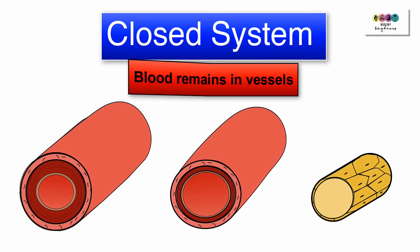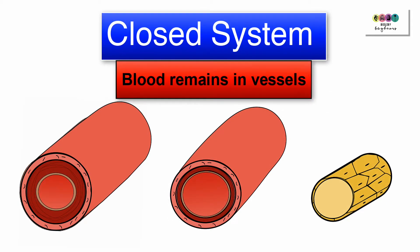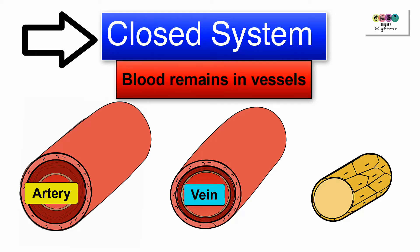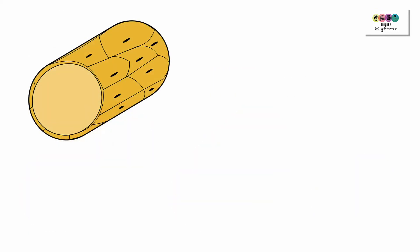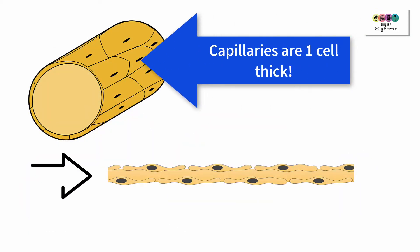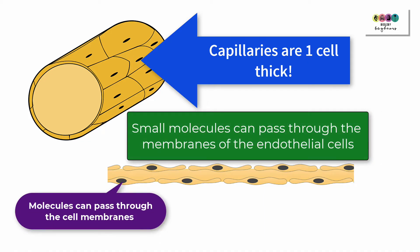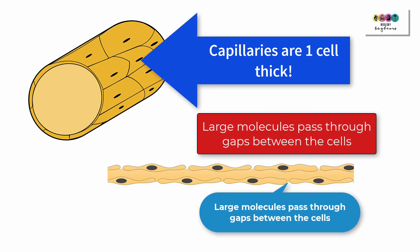We describe our circulatory system as a closed system—this means that the blood always remains in a vessel such as the artery, the vein or the capillary. Capillaries are the smallest of the vessels, they're only one cell thick, made up of a single layer of endothelial cells. When substances need to enter or leave the blood, they do so by passing either through the cells or larger molecules through gaps in the cells.